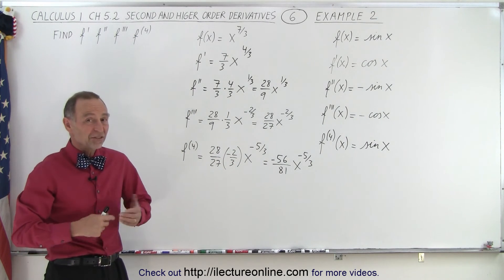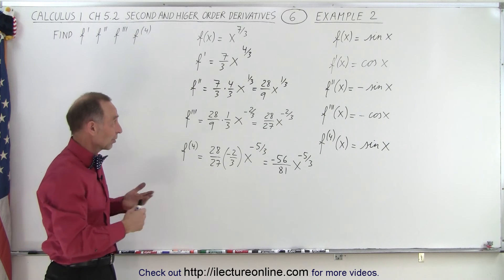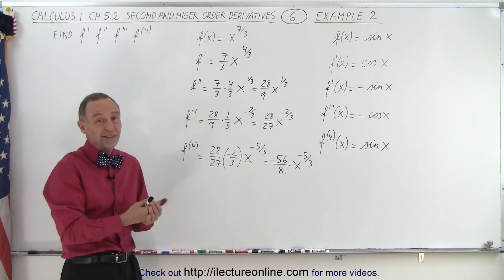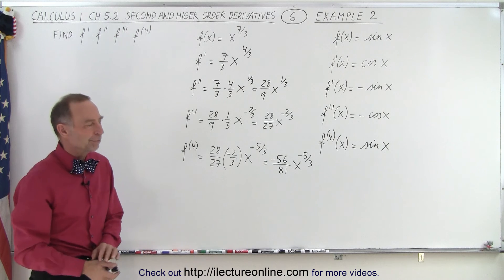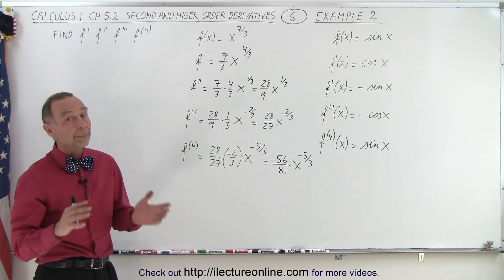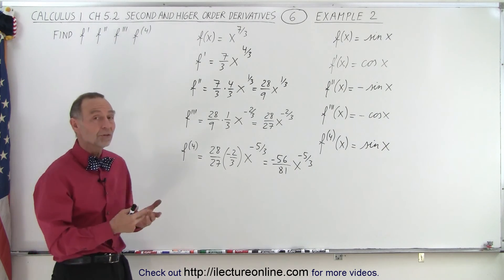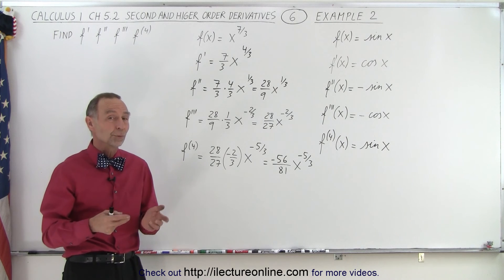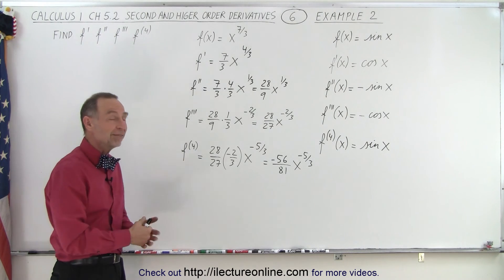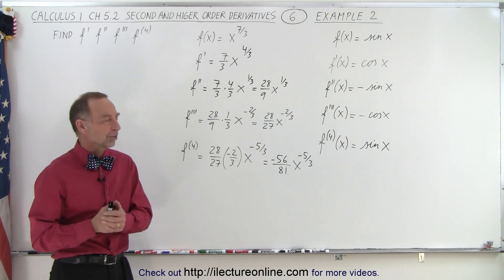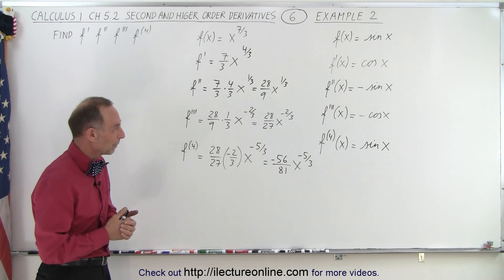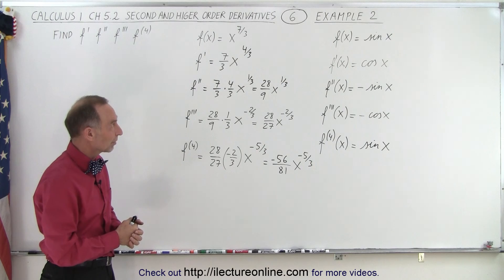So you can see that taking a second derivative, taking a third derivative, taking a fourth derivative, a lot of times is simply taking another derivative. In some cases things might get quite complicated, especially when we're dealing with quotients and using the quotient rule — things can get a little messy, and there's a lot of algebraic manipulation that needs to happen. We have a few examples of that coming up. But this is pretty straightforward — that is how we take higher-order derivatives.